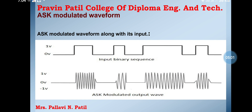This is the ASK modulator waveform. The modulated signal has a high frequency carrier. The binary ASK signal gives zero value for low input, while giving the carrier output for high input. This is the waveform of the ASK modulator.